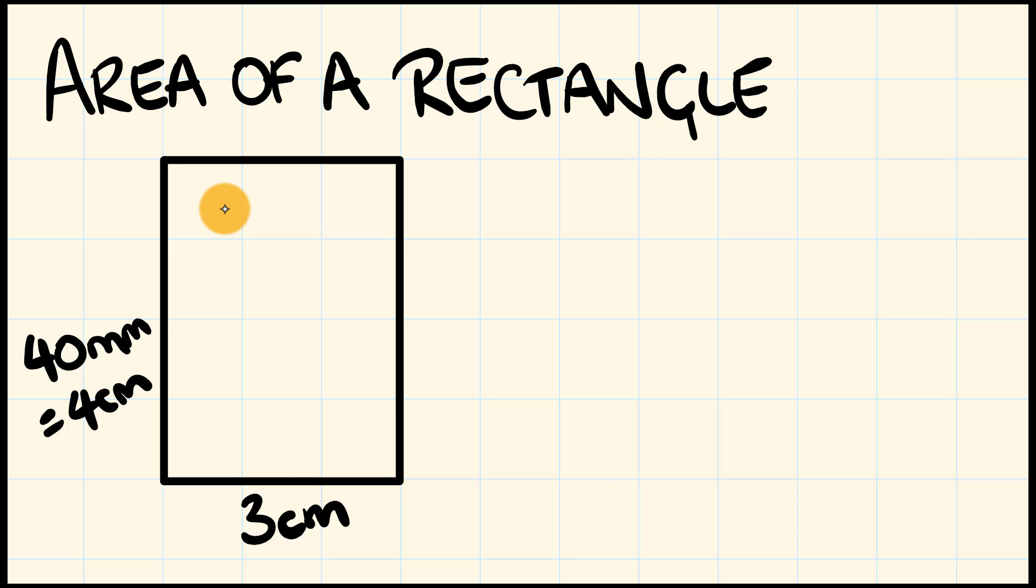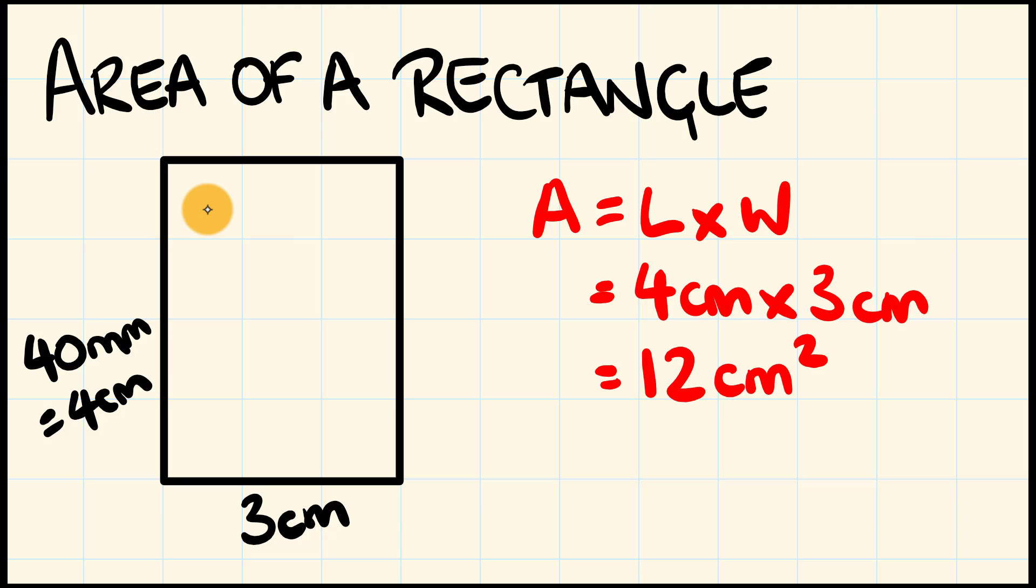We have the area is equal to the length times the width, which is equal to, well, the length is 4 centimetres and the width is 3 centimetres. So the area is equal to 4 centimetres times 3 centimetres. This is 12 centimetres squared. And we can even draw these in right now. 4 multiplied by 3, and there you go, we have 12 centimetres squared.